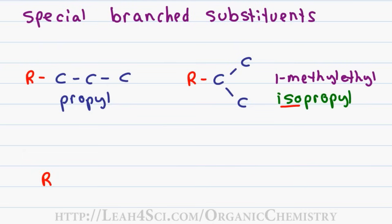When written in line structure, the standard propyl has the first end attached to the R group, with 3 carbons coming off the substituent. The isopropyl also represents the bond between the parent chain and substituent, but the 3 carbons are attached at the second rather than the first carbon.